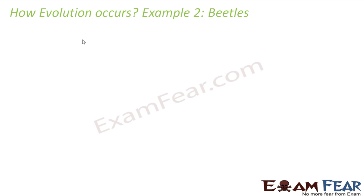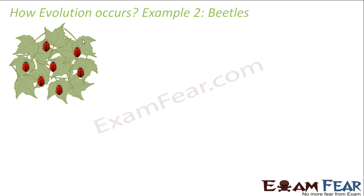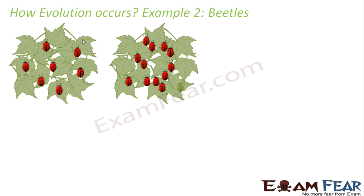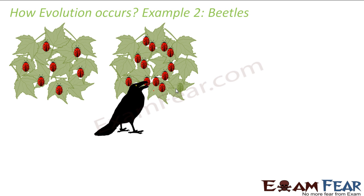Let us take the example of beetles — small insects generally seen in plants or bushy areas. Suppose in some bushy area there were red beetles. With reproduction, more beetles were produced. Due to a small variation during sexual reproduction, one beetle was formed which was green in color — a result of variation. Now birds like crows started eating the beetles, picking them up from the bushes.